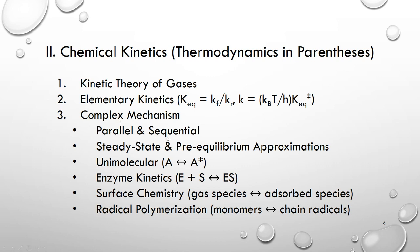The last chapter consists of several complex mechanisms. So I introduce the parallel and the sequential mechanism first. They are relatively easy. And then I introduce steady state approximation and pre-equilibrium approximation. This is to help students tackle more complex mechanisms. For example, unimolecular reactions, enzyme kinetics, surface chemistry, and radical polymerization. And in each of these four very complex mechanisms, we also see some thermodynamics. For example, in the unimolecular reactions, we have equilibrium between the reactant and the activated reactant. In enzyme kinetics, we see also equilibrium between enzyme plus substrate and the complex. In the surface chemistry, we have equilibrium between the gas species and the adsorbed species. In radical polymerization, we have equilibrium between monomers and the chain radicals.